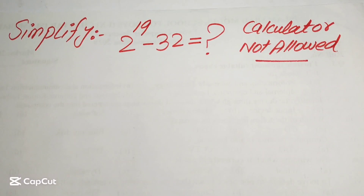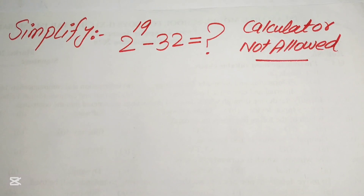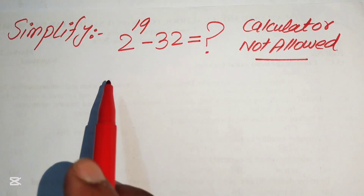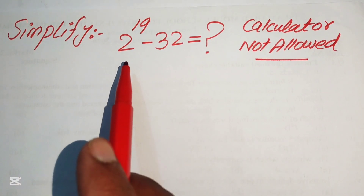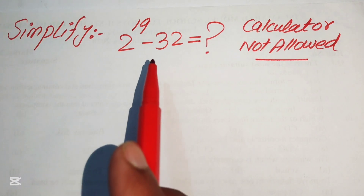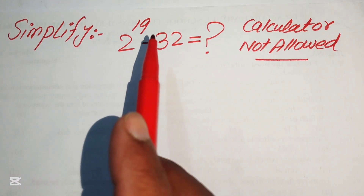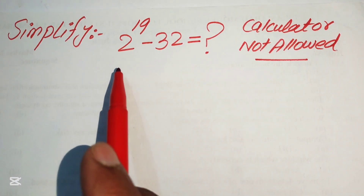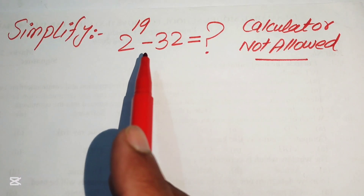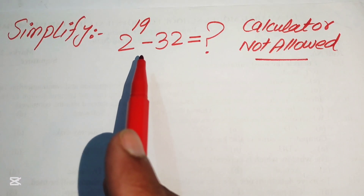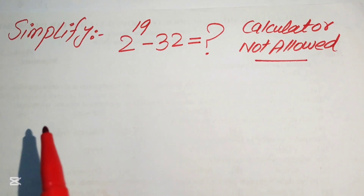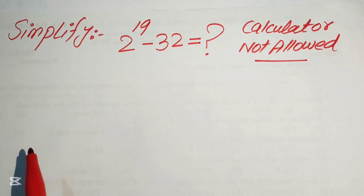Hello everyone. How to simplify this nice algebraic expression if we have 2 to the power of 19 minus 32? We simplify this algebraic expression into the simplified form.